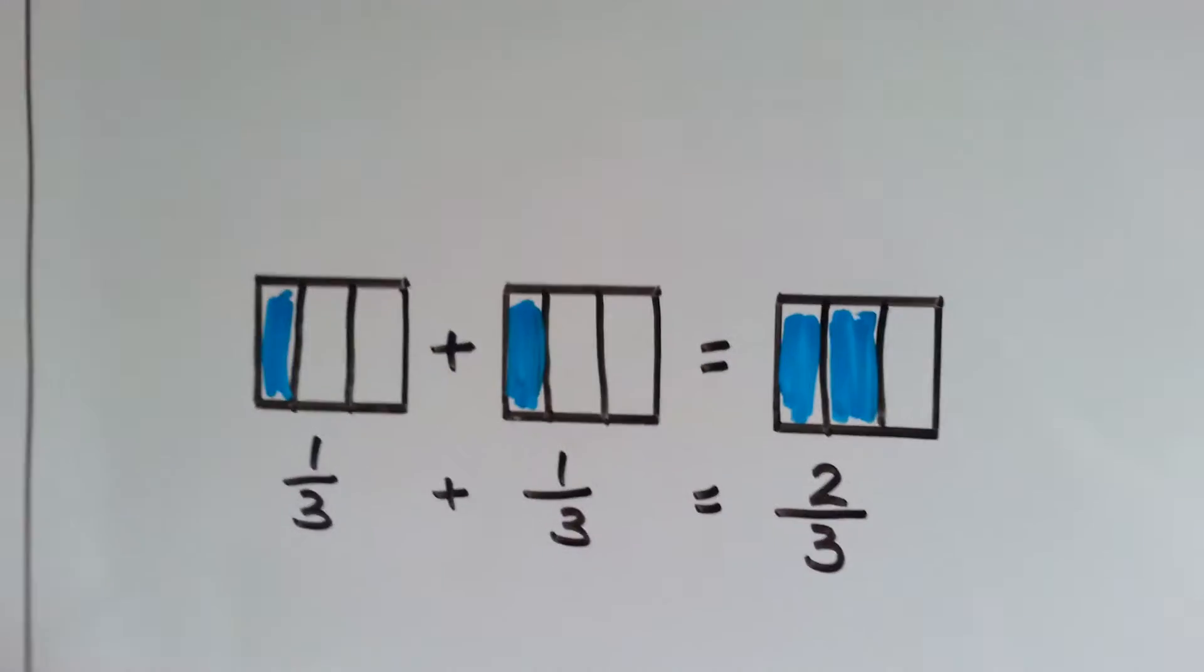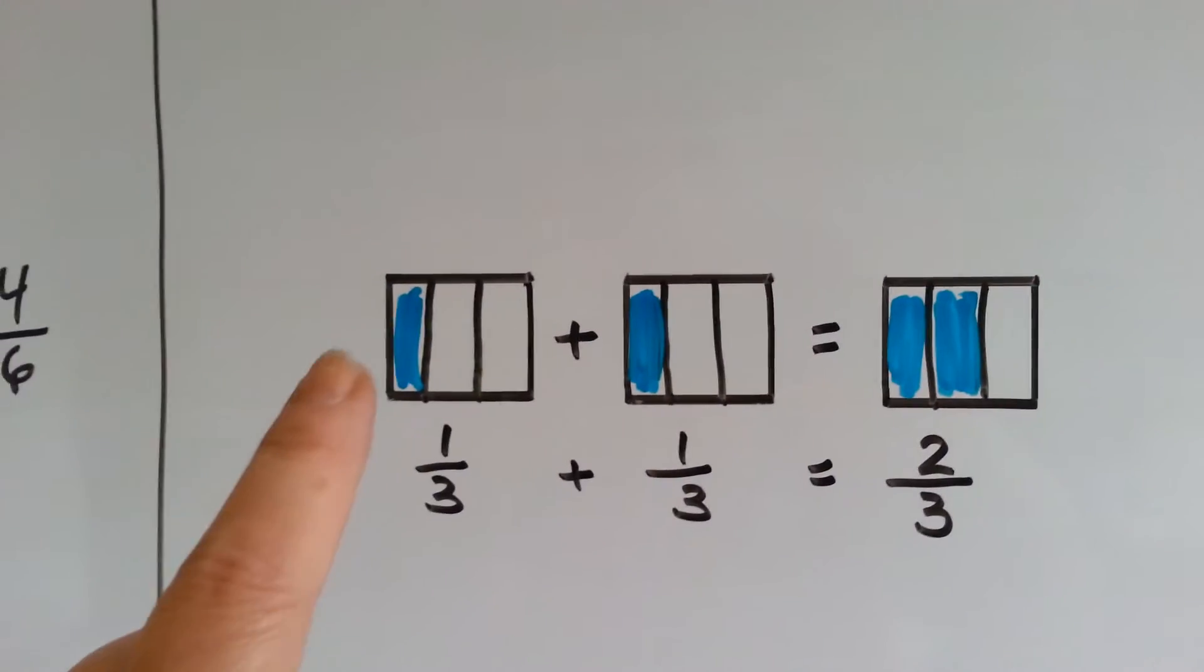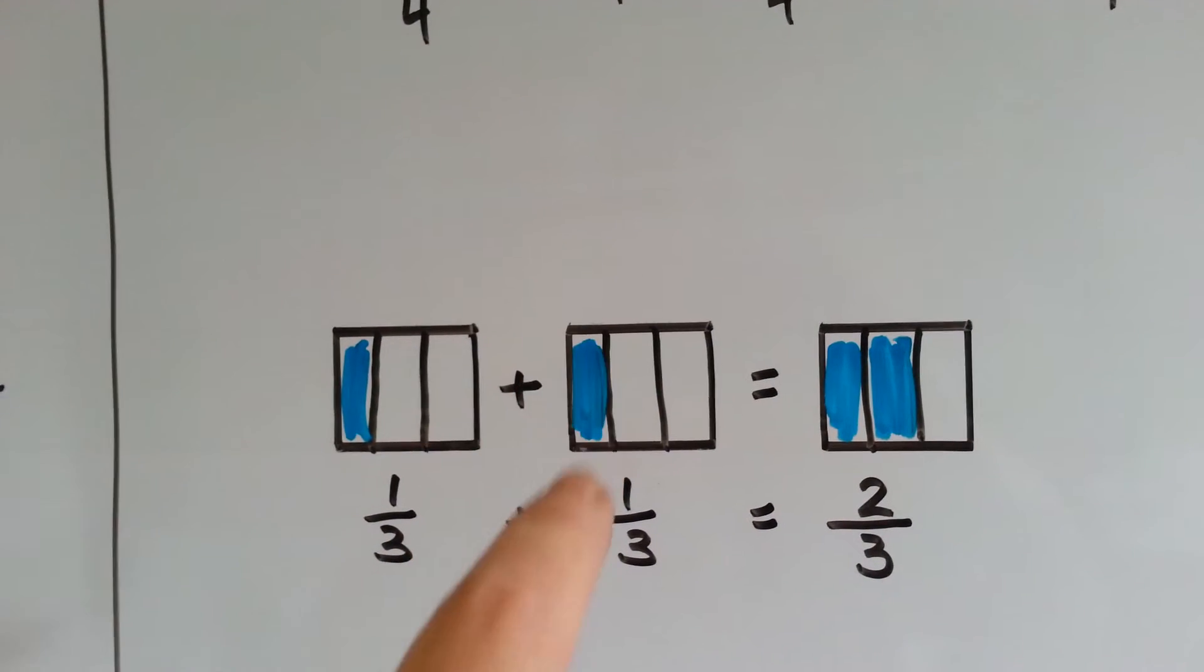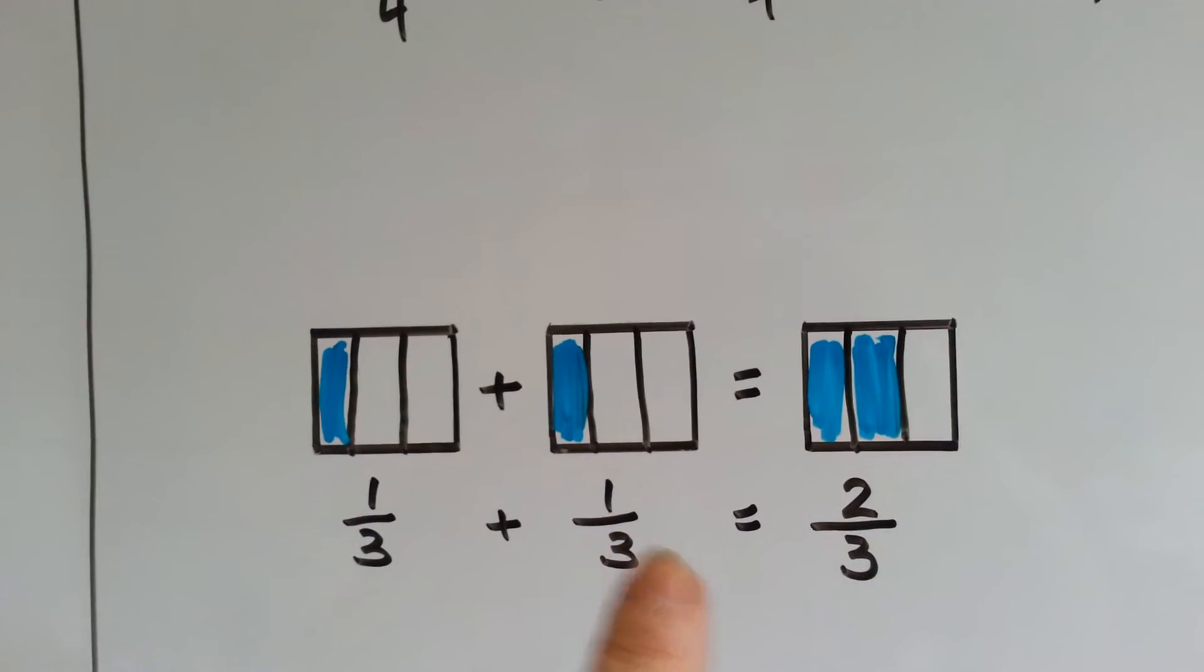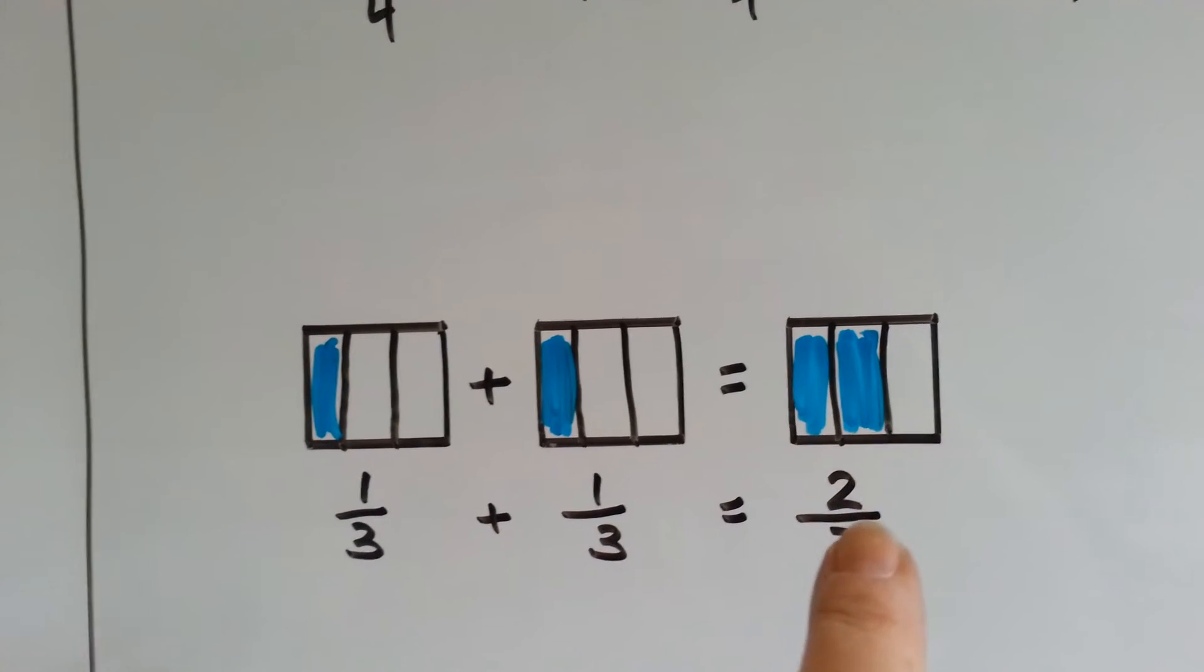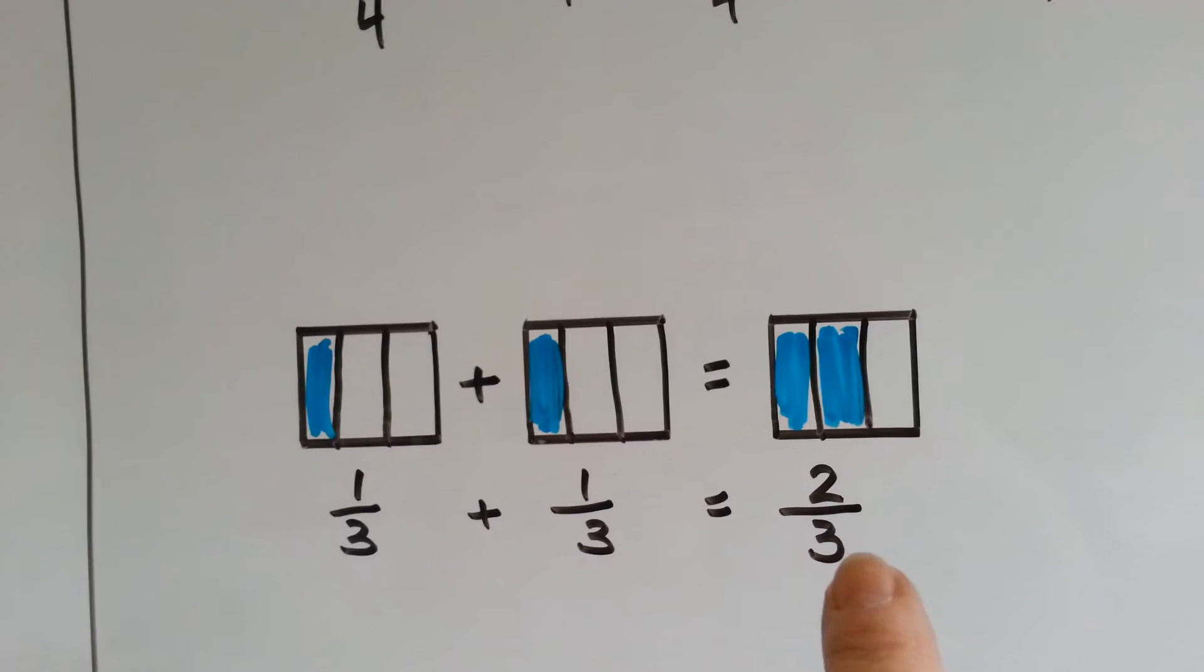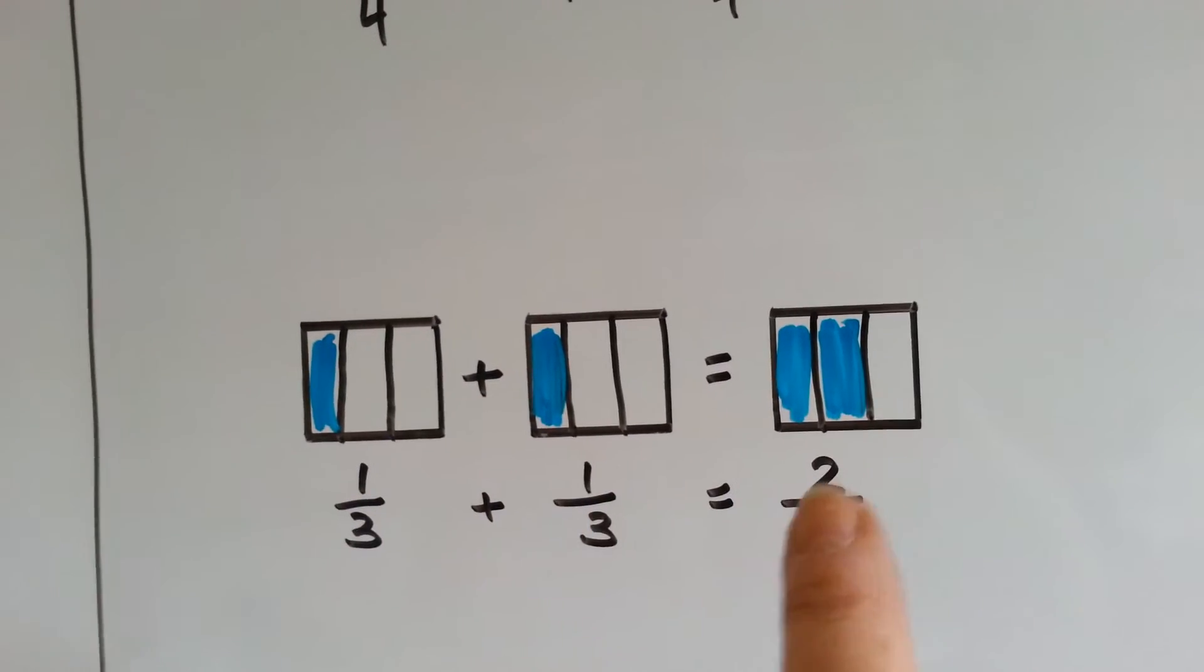Let's look at this one. These boxes are split into thirds. They each have 3. 1 third is blue, 1 third is blue. When you add 1 third plus 1 third, you get 2 thirds. You slide the denominator across, and you add the numerator. 1 plus 1 is 2.